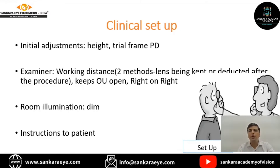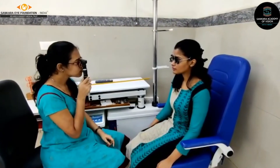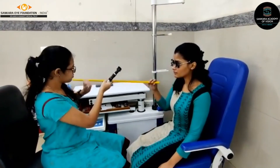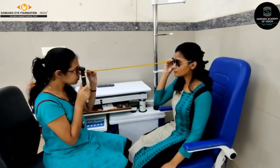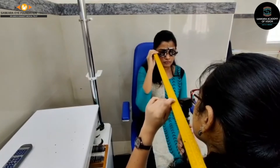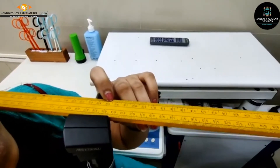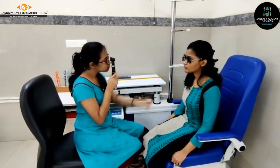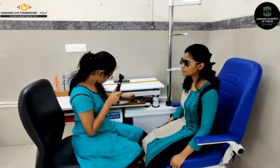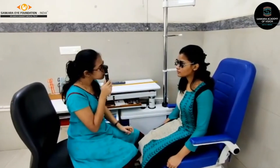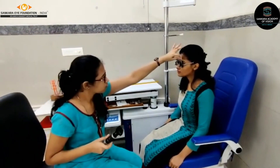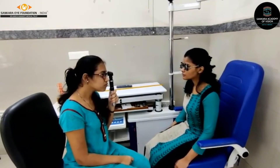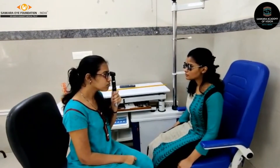In the demonstration video, the examiner uses the retinoscope to look at the right eye and measures the working distance, which is very critical. The shorter the distance, the more working distance power must be accounted for. The working distance is measured at 65 cm. The examiner then examines the subject's right eye refractive error while the subject's left eye looks at the target, before moving to examine the left eye.